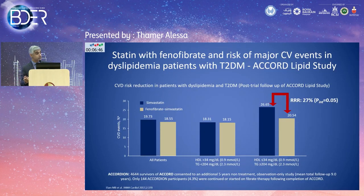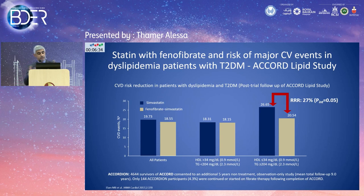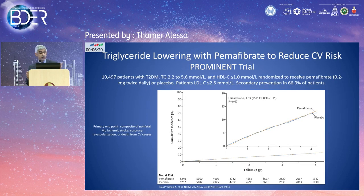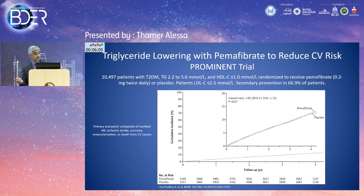The ACCORD-LIPID trial post-trial follow-up also showed no overall cardiovascular benefit with fenofibrate versus placebo, except in patients with high baseline triglycerides above 2.3 mmol/L or HDL below 0.9. The recently published PROMINENT trial, using pemafibrate — a more selective PPARα agonist — in statin-treated patients also failed to reduce cardiovascular disease. So fibrates have not demonstrated consistent benefit on top of statin therapy.